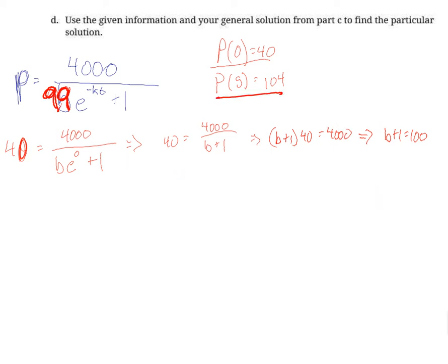So now that we know that, we can use this guy here. Let's do that in green. So at time 5, 5 years, there will be 104 elk. So 104 equals 4000 over now the 99 that we know, e to the negative k times 5 plus 1. So what should we do? Let's multiply both sides by the denominator and divide by 104. So we get 99 e to the negative 5k plus 1 equals 4000 over 104.